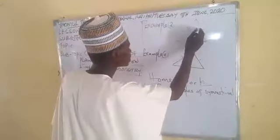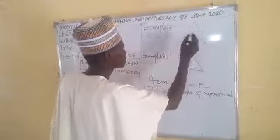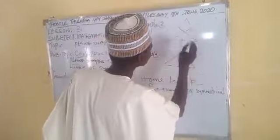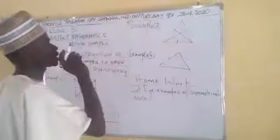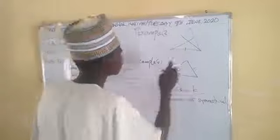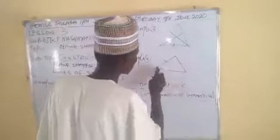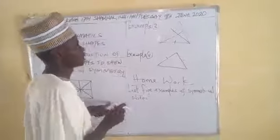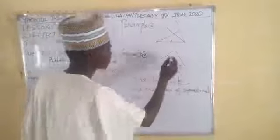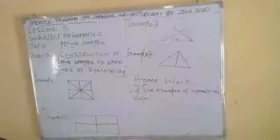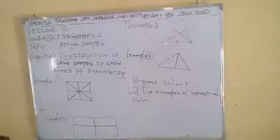We draw a line dividing it into equal halves. As a special triangle, it has only one line of symmetry. Our homework is to list five examples of symmetrical objects.